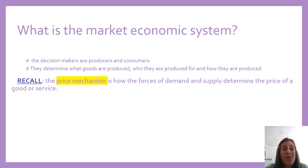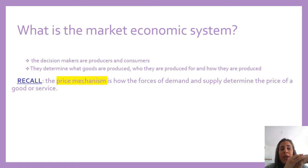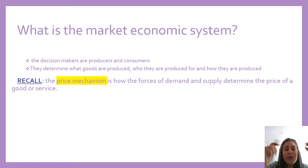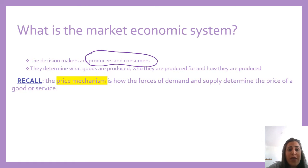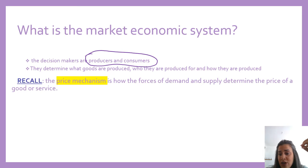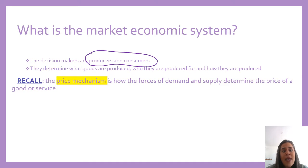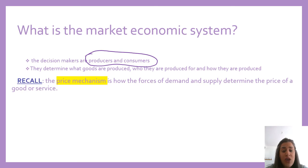So what is the market economic system? It is a system where the market forces are the ones that are in charge. All the decision makers are both the producers and the consumers — the buyers and the sellers — that determine what is to be produced, who they are produced for, and how they are produced. So mainly they will be the ones answering the questions of resource allocation.